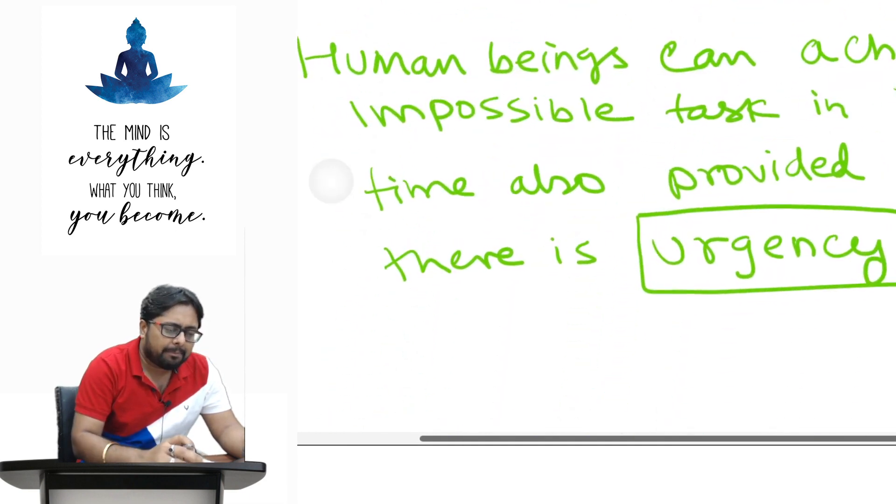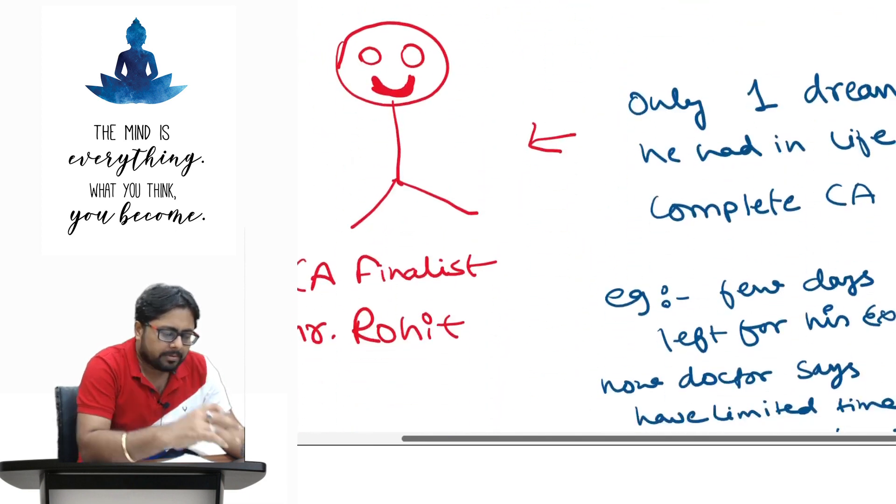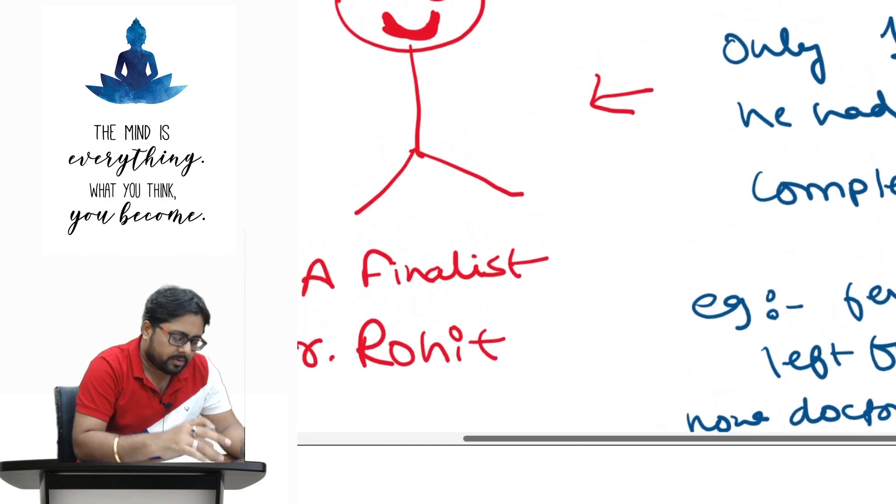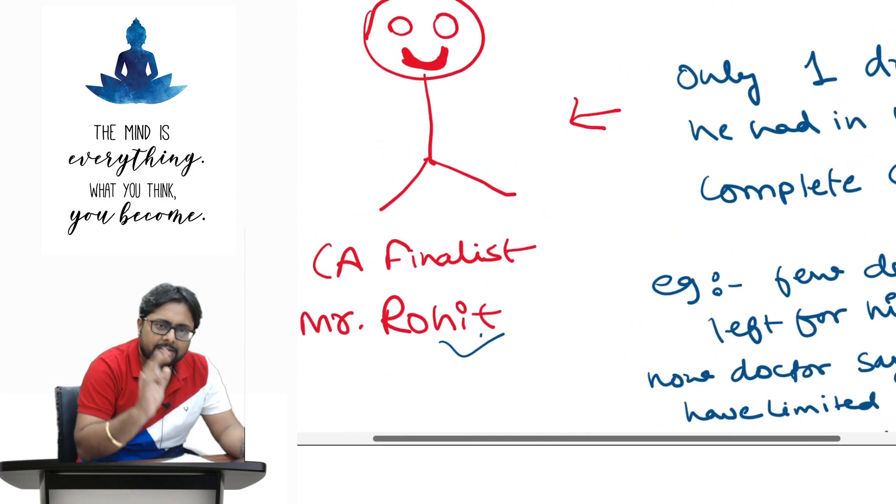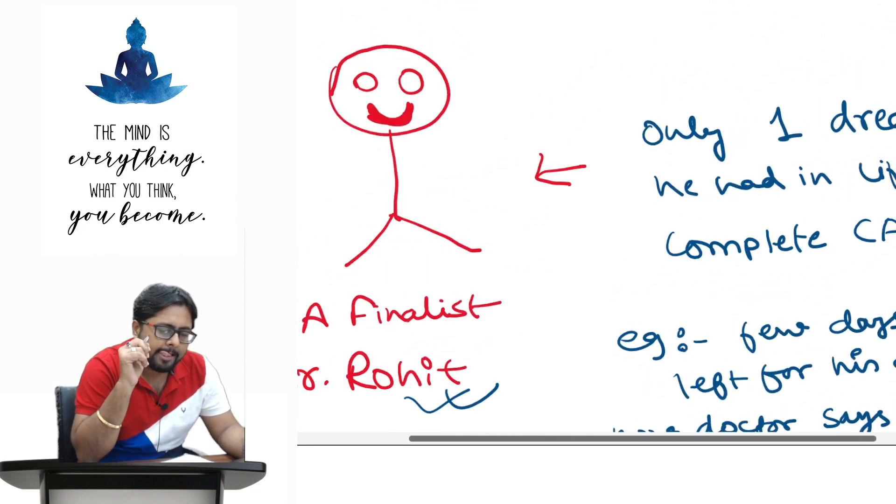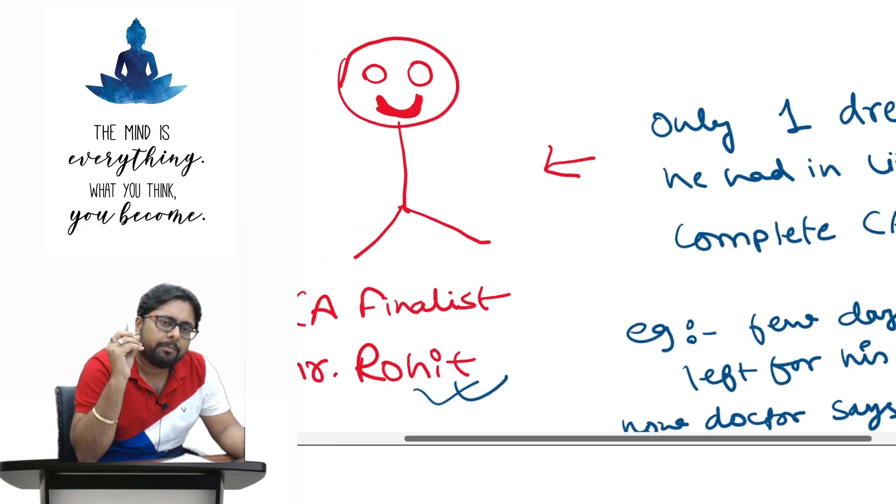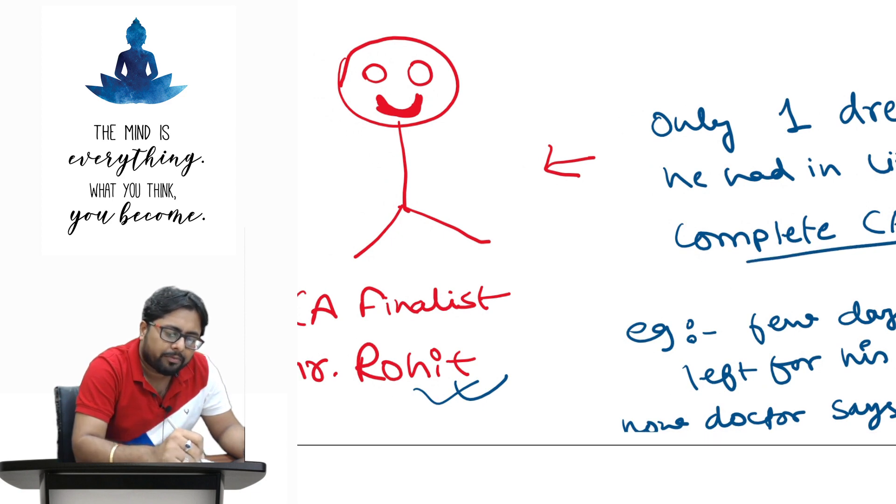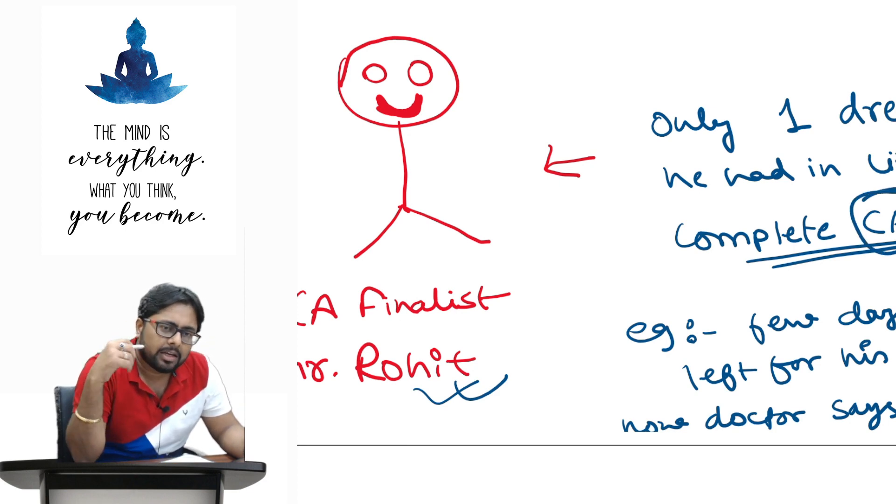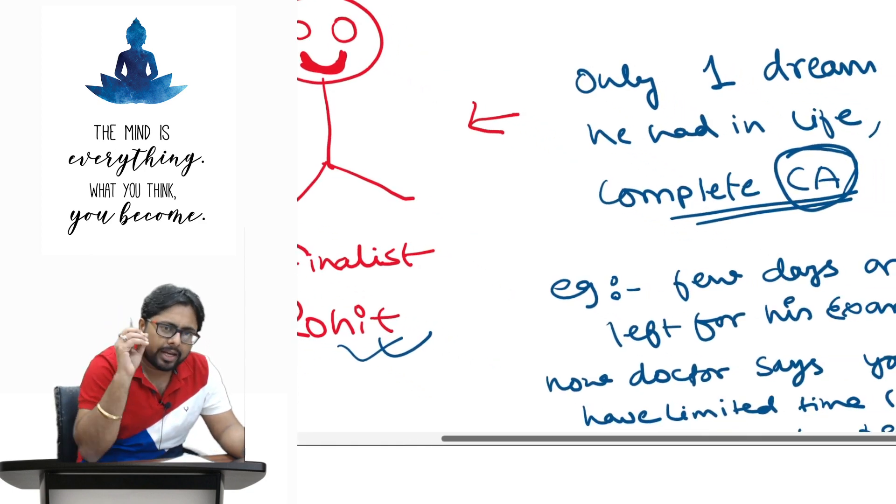Another example, say there is a guy called Mr. Rohit, he is a CA finalist. Example. So, his dream, one dream. His only dream was to complete CA before he dies. Or he wants to complete CA. It was his childhood dream and he is struggling very hard for it. This is unrealistic data.